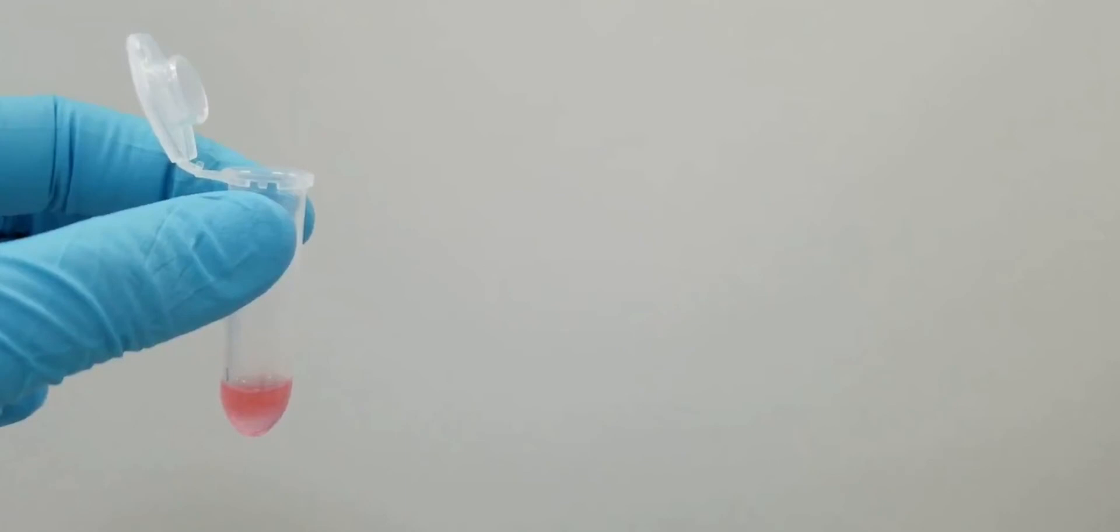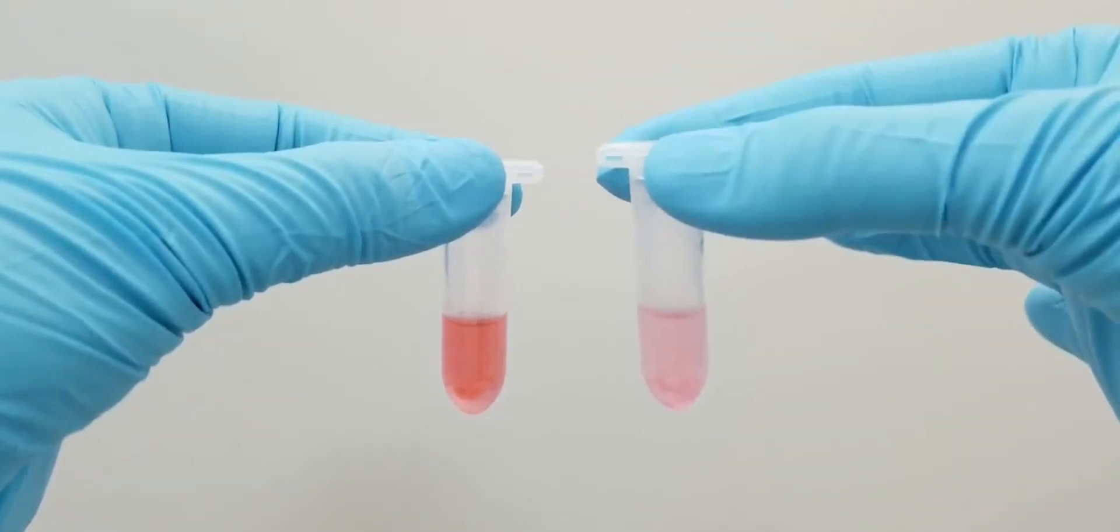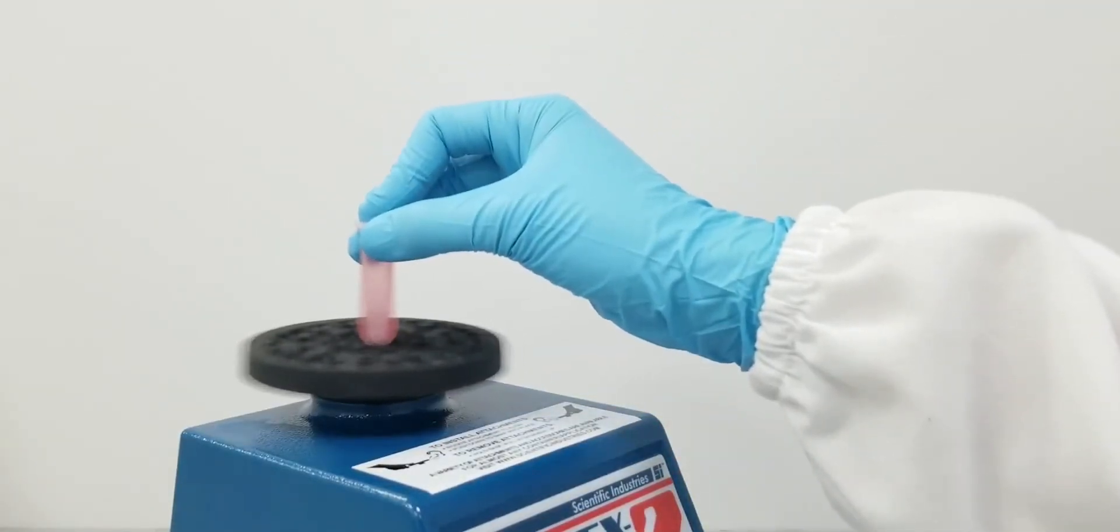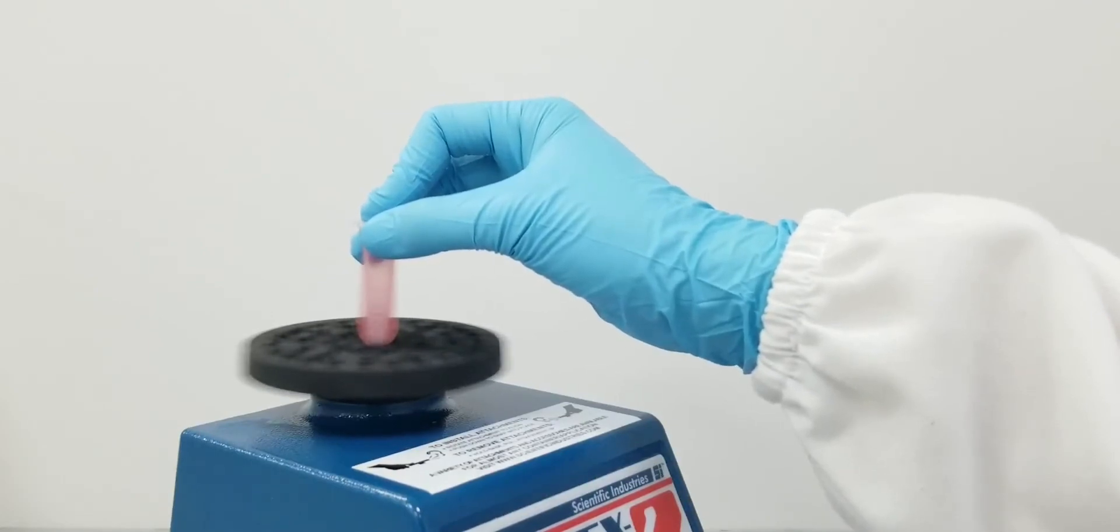If you have less than 600 microliters of the VTM, make sure to top your sample up with 600 microliters using solution A. Mix thoroughly for at least 20 seconds until homogenous and briefly centrifuge.